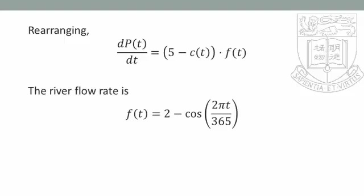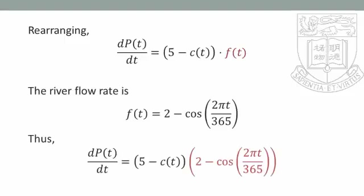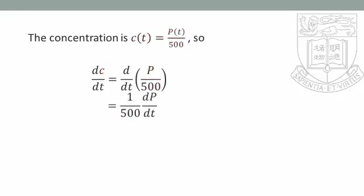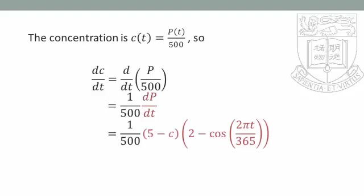The river flow rate is F(t) = 2 - cos(2πt/365). Substituting into the rate equation, we get dP/dt = (5 - C(t))·(2 - cos(2πt/365)). Since the concentration equals the total amount divided by the volume of the lake, C(t) = P(t)/500, and dC/dt = (1/500)·dP/dt. Substituting the expression for dP/dt, we get dC/dt = (1/500)·(5 - C(t))·(2 - cos(2πt/365)).